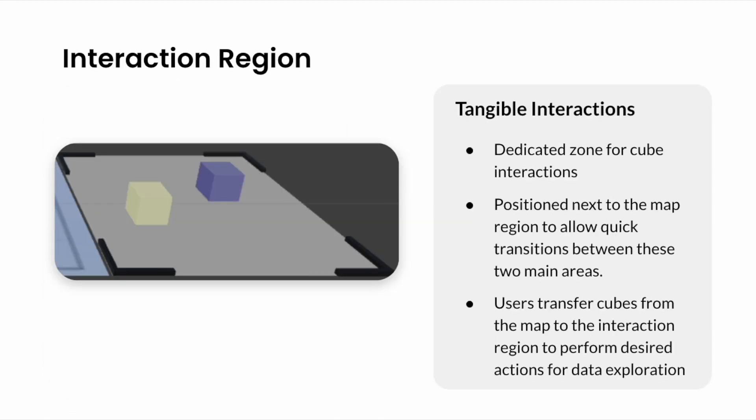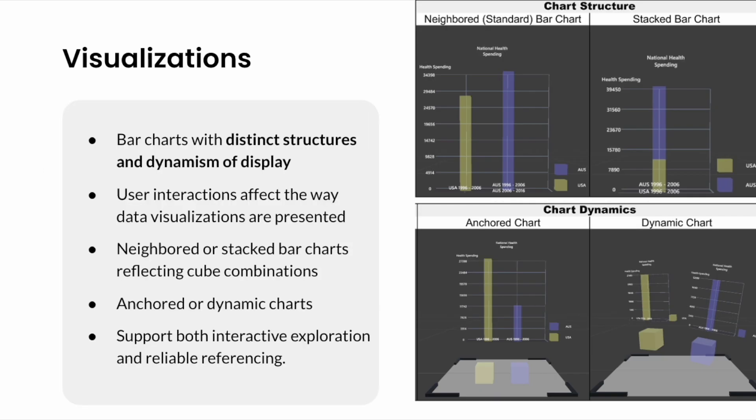The interaction region is where the users can actively engage with the tangible cubes. This region is located adjacent to the map region to allow easy transition. For our prototype, we employ bar charts with different structures and dynamics. There are two types of chart structures, neighbored and stacked. These are designed to reflect the combination of the tangible cubes. For example, when two tangible cubes are neighbored, the neighbored bar chart visuals will be displayed. Conversely, when two cubes are stacked, the stacked bar chart visuals will be displayed.